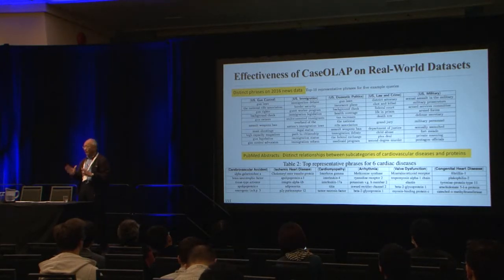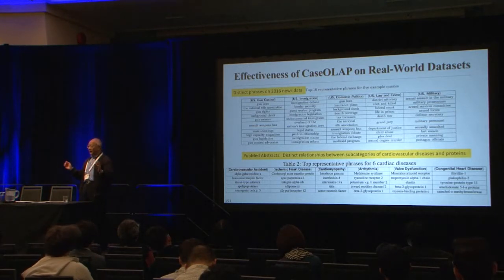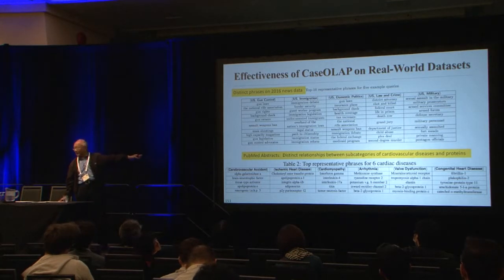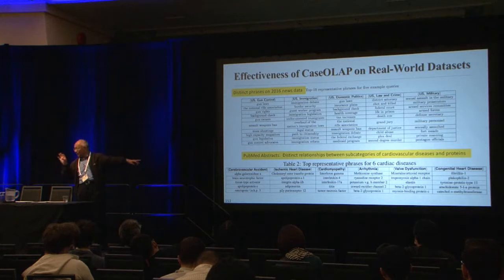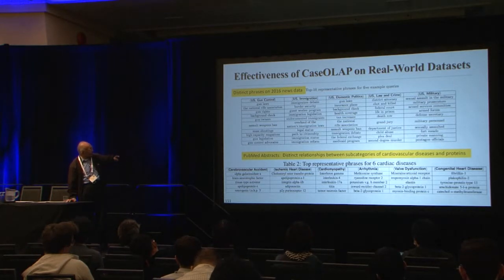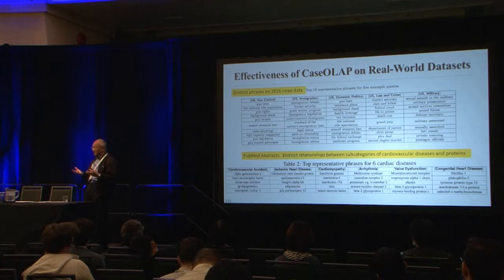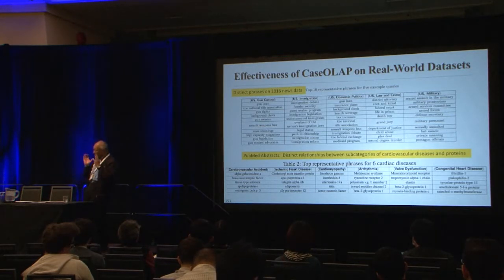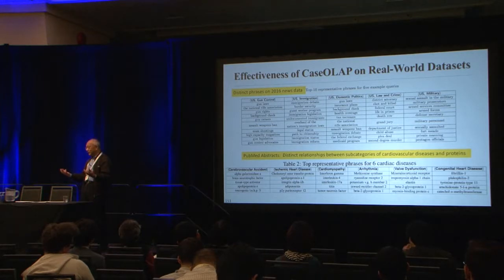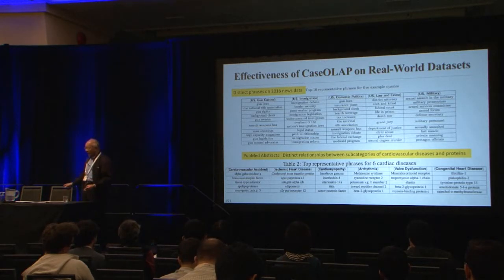I showed this to UCLA medical school — I told them it's a computer science thing, but they got very excited and gave us a task. They are working on cardiology. Cardiology is not one disease — there are six major categories like vascular problems, muscle problems, AFib, and others. They wanted to find the proteins that are dedicated to each specific category but not to the other categories.